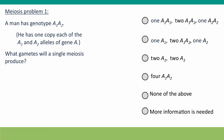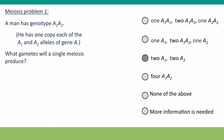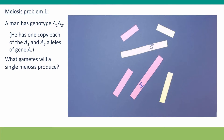So here's the first problem. A man has genotype A1, A2. We're only considering one gene on one chromosome. What gametes is meiosis going to produce? By far the easiest way to solve problems like this is to simulate them with chromosomes made of paper strips, as we did in the first video of Module 6 for mitosis. So let's do that now for meiosis.